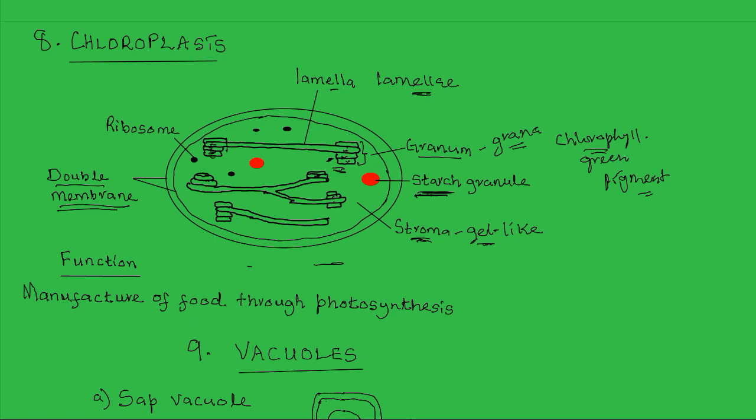Also, within the chloroplast, there are ribosomes. The function of the ribosomes? Remember, ribosomes provide the site for protein synthesis. These ribosomes in the chloroplast provide the site for the synthesis of enzymes that are used in the process of photosynthesis.